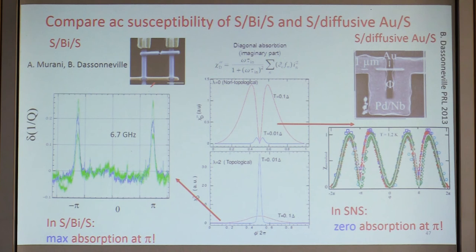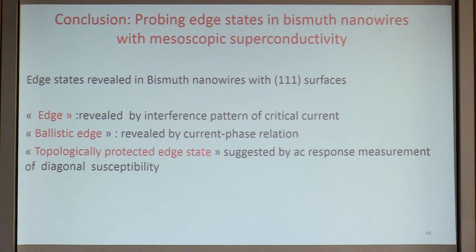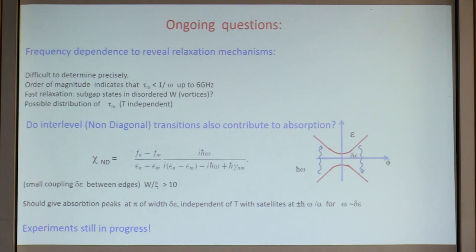In conclusion, we've studied these edge states using three probes: the interference pattern of the critical current shows the current is flowing at edges; the current-phase relation reveals ballistic edge states; and the AC response measurement of the dynamical susceptibility suggests topologically protected edge states. There are ongoing questions, but this is where we stand.